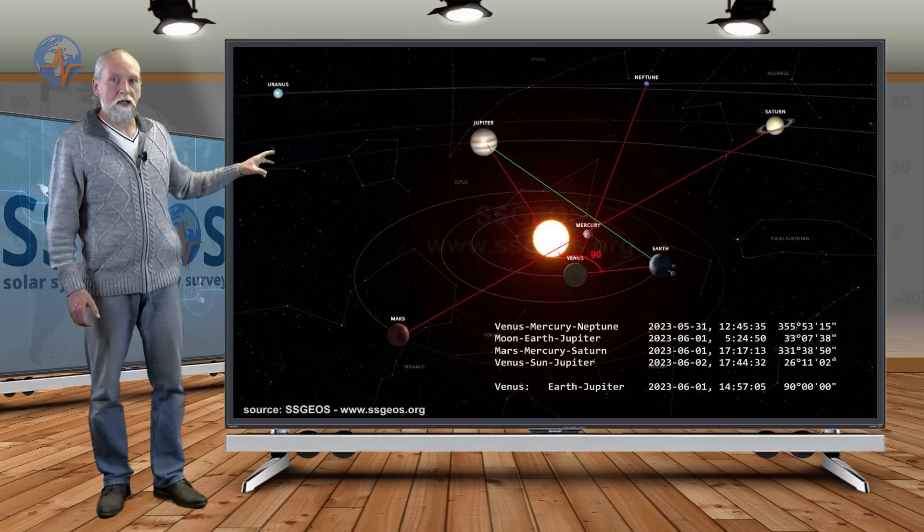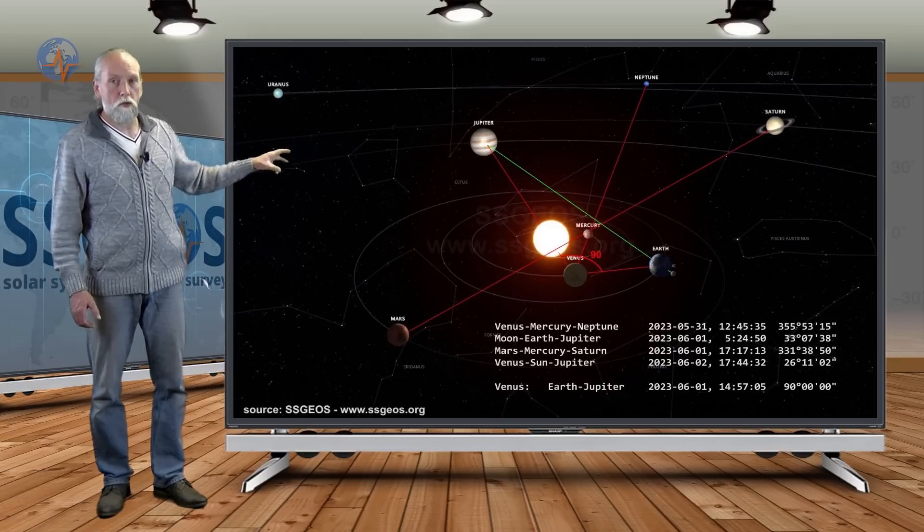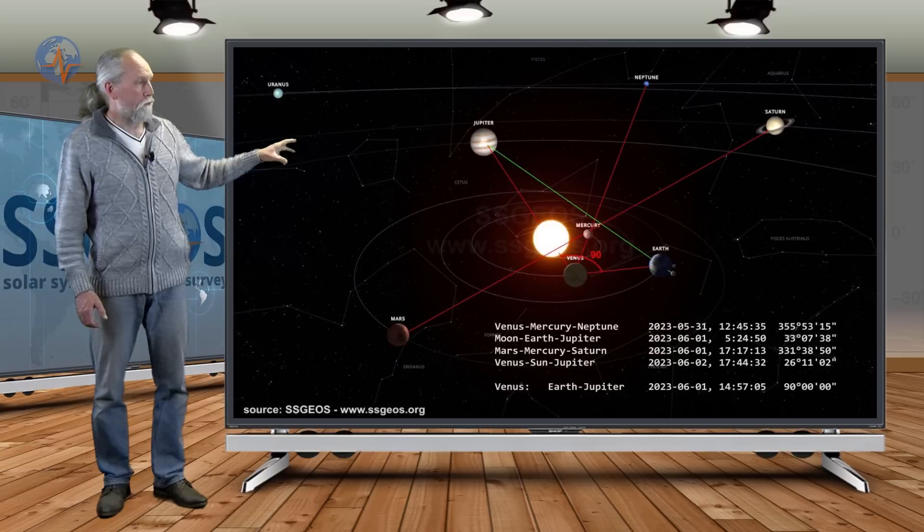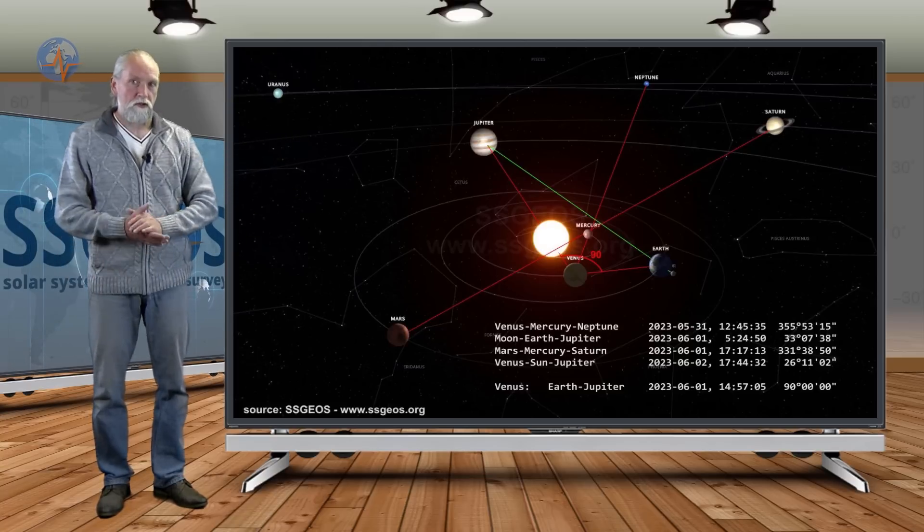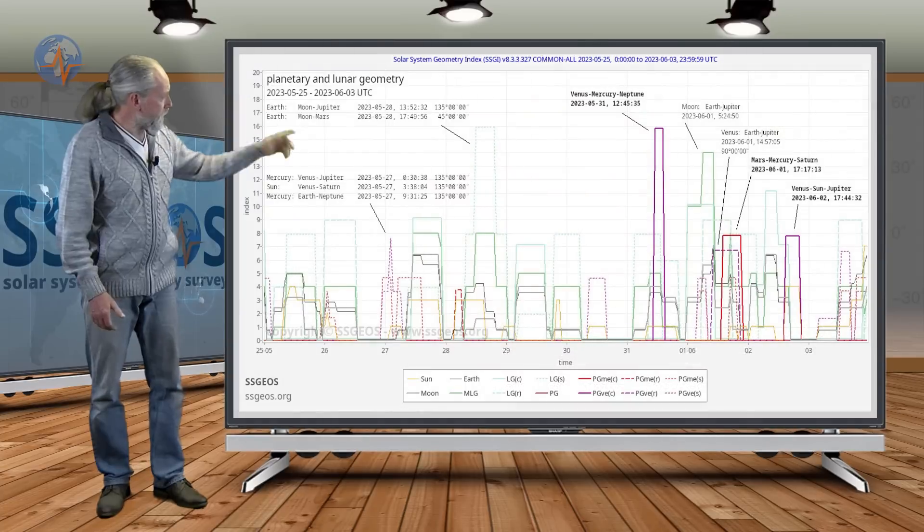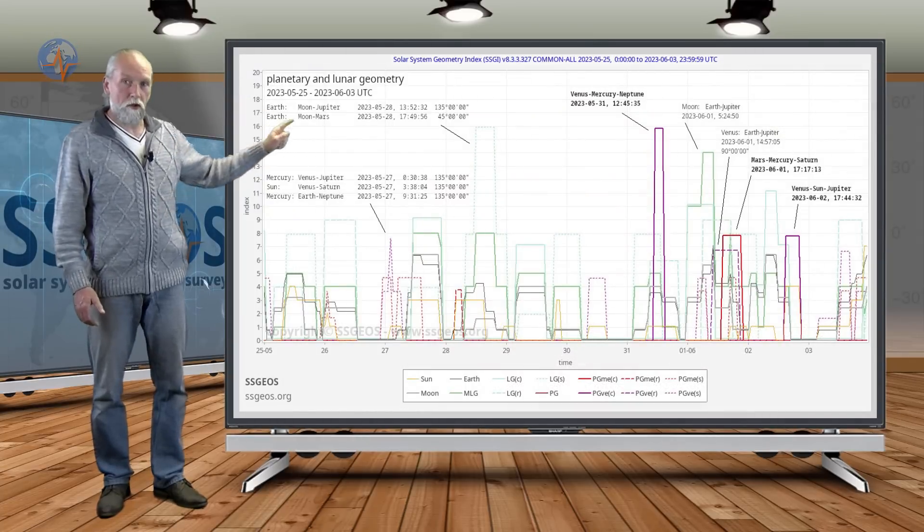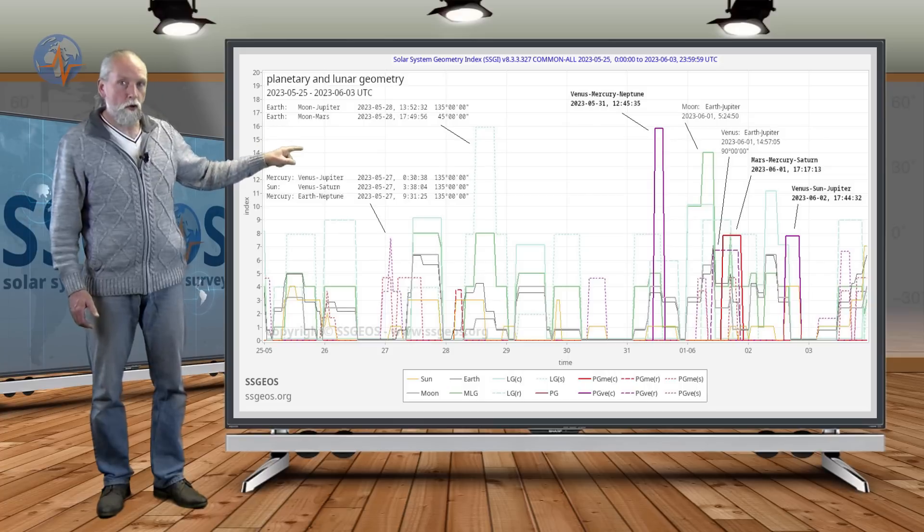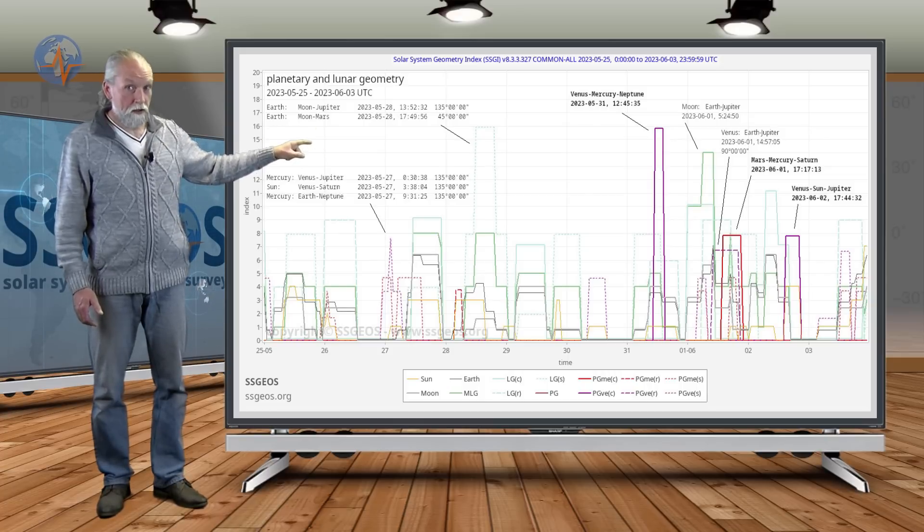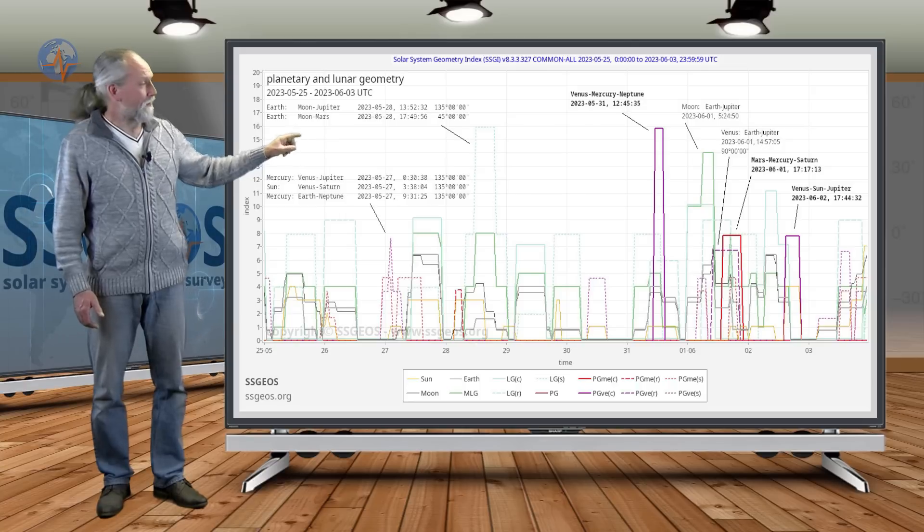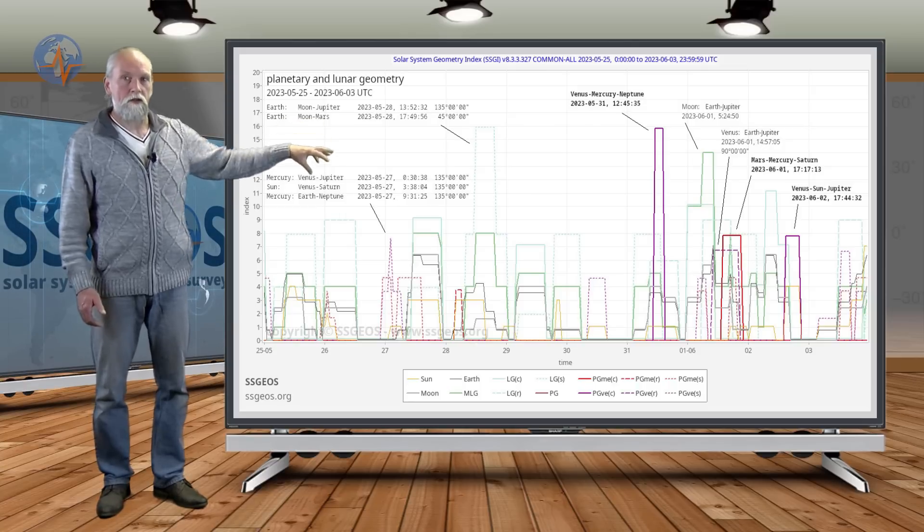I will come back to this geometry in the next update because I also want to show what is the geometry that we're going to have following this critical convergence. For now we have a view of the SEGI graph for the coming days but keep in mind that critical planetary geometry later on because we can have a really serious seismic increase at the time of that geometry and following that geometry.